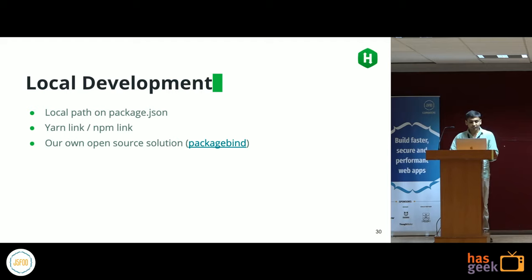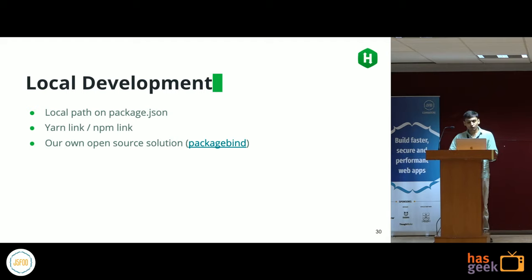The second thing we tried was yarn link, similar to npm link — it creates a symlink between node_modules and the actual folder so you don't need to yarn install on your application. But you still had to run builds, because you write source files and build a distribution file (lib or ES modules), and the application points to those lib folders. That was also cumbersome, so we created our own open source solution called package-bind.